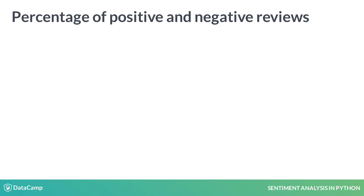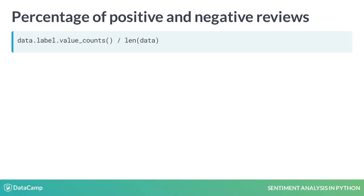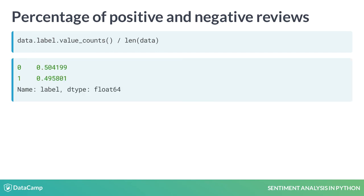If we want to see the number of positives and negatives as a percentage, we can divide the expression by the number of rows, which we obtain with the len() method. We see that the samples are balanced — around half of the reviews are positive and half are negative.